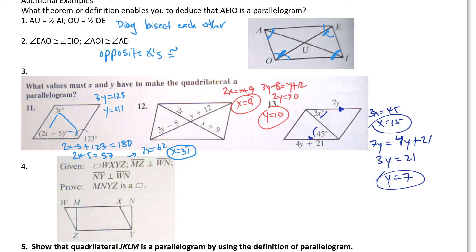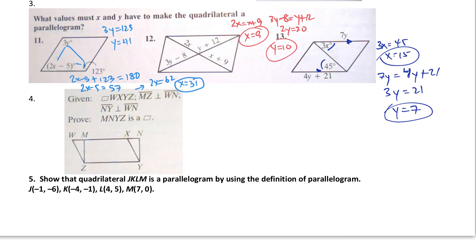Now let's move on to a proof. Given parallelogram WXYZ, and MZ is perpendicular to WN, and NY is perpendicular to WN as well. We need to prove that MNYZ is a parallelogram. Our givens are that WXYZ is a parallelogram, MZ is perpendicular to WN, and NY is perpendicular to WN, so we have right angles there.